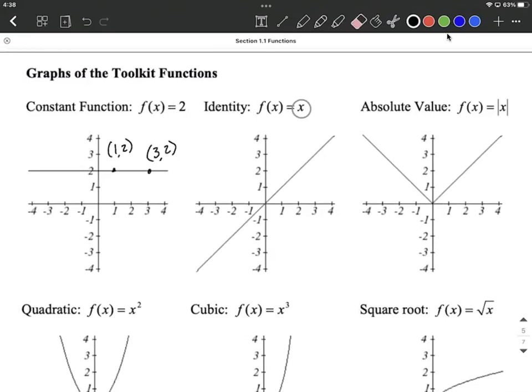The identity function is this line that goes straight through the first and third quadrants. And we had already mentioned like the ordered pair 1, 1 is going to be on here. Or 2, 2 matches up with another point on here. Whatever you input, you're going to output. The absolute value function kind of looks like a V over here on the right hand side.